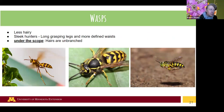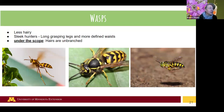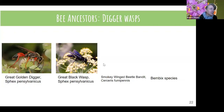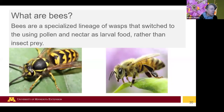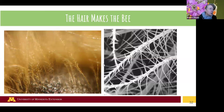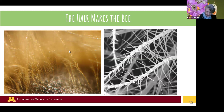For wasps, some can be somewhat hairy but they won't be super fuzzy — they tend to be sleeker. If you look under a scope, the hairs are unbranched. Bees have branched hairs that look like a stalk of wheat, whereas on wasps it'll just be one straight piece. This is what defines bee hair and why bees are fuzzier.